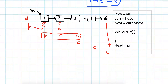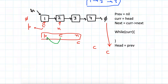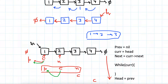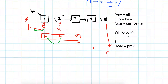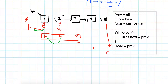In the last state, previous will be 4, and then head should be set to that previous. Now let's fill in the loop body: current.next will always point to previous. Here previous is null, so current.next becomes null. We've updated this pointer.